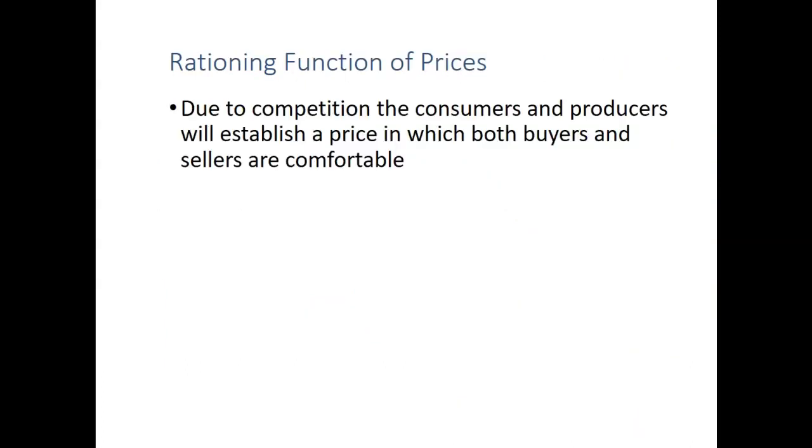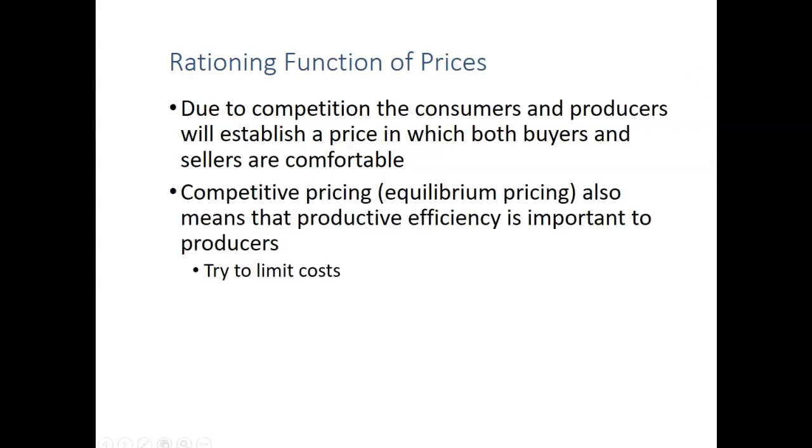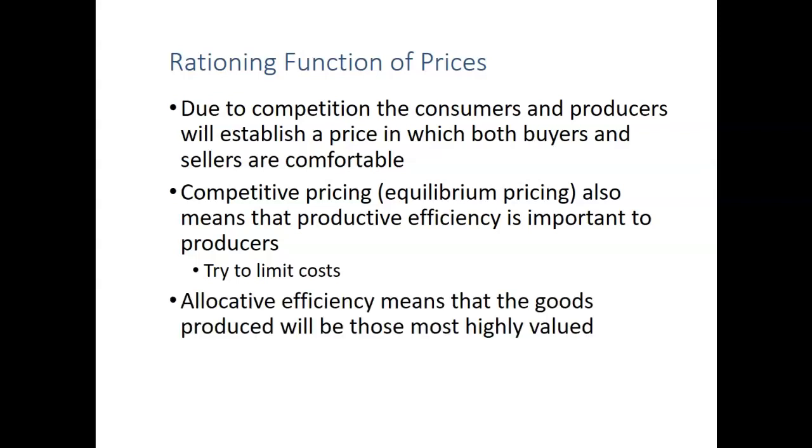So the rationing function of prices sounds really complex, and it's really not. It's the idea that due to the competition, the consumers and producers will establish a price in which both the buyers and sellers are comfortable. So what's that mean? So essentially, competitive pricing means there's a large number of buyers and large number of suppliers. That's the competition aspect. Both groups are going to try and be as efficient as possible. On the producer side, they're going to look at productive efficiency, and that's going to be a larger topic later on. So we're going to kind of put that to the side. But a big thing that comes through when there's competitive pricing is this idea of allocative efficiency. It means that the goods produced will be the most highly valued.